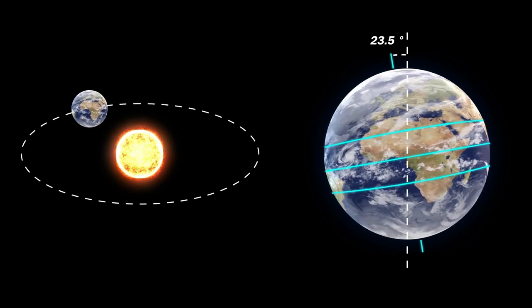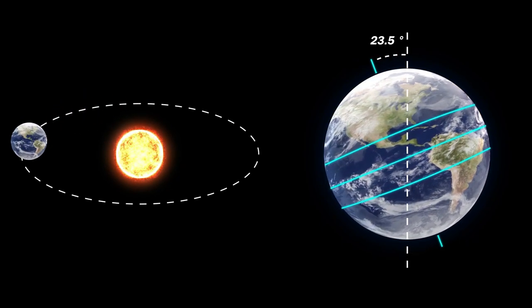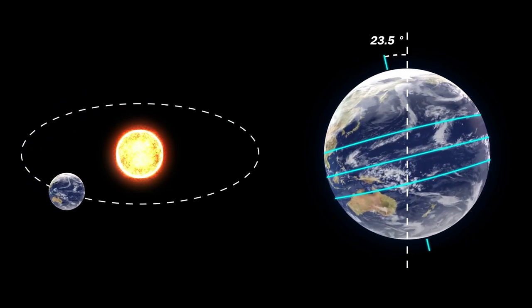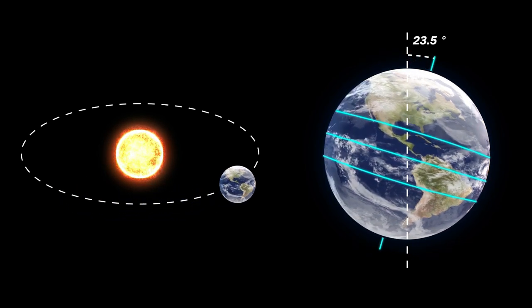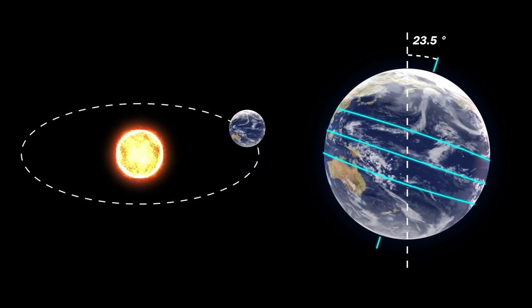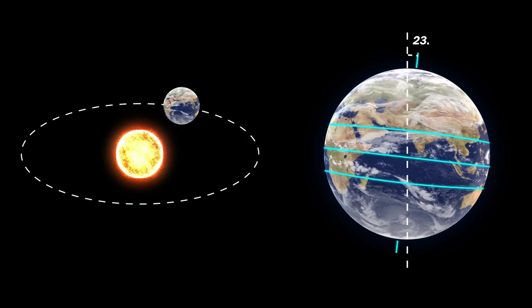Earth revolves around the sun in its orbit and takes roughly 365 days and 6 hours to complete one revolution, also called a year. When the axial tilt and revolution around the sun are combined, one can understand the real reason why tropics are important.